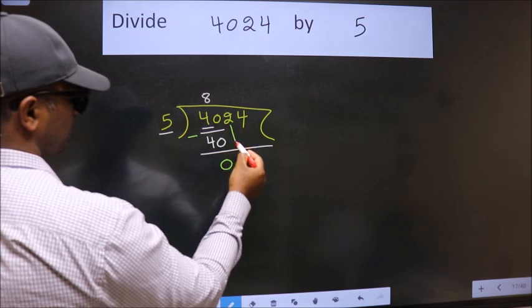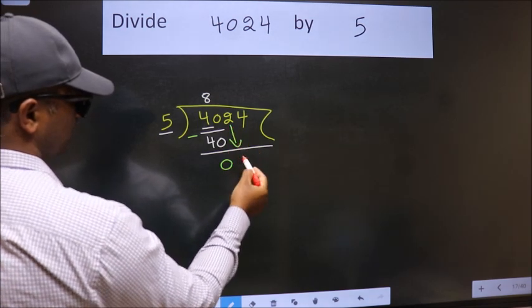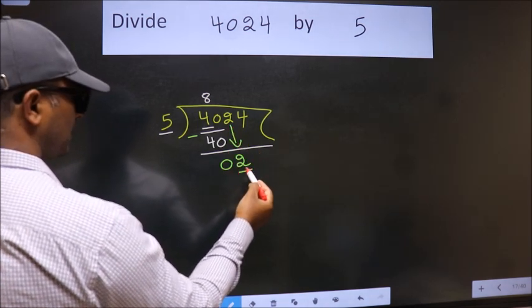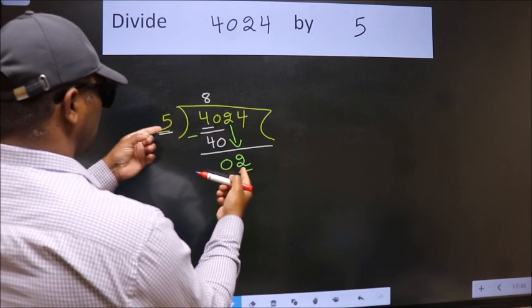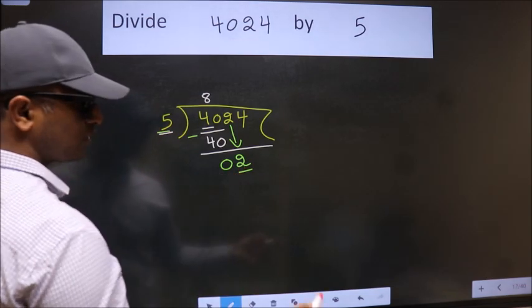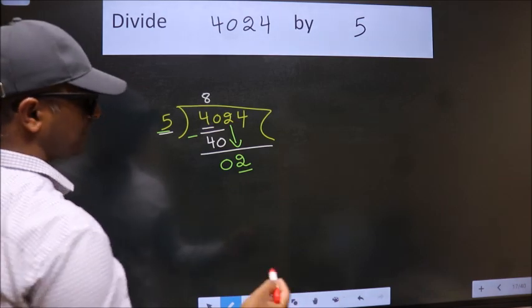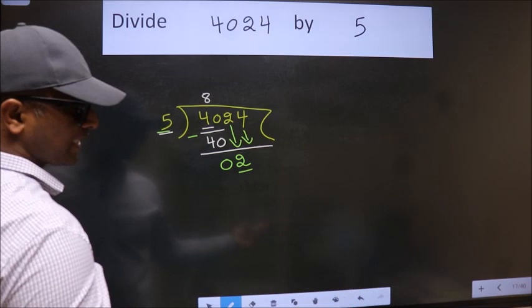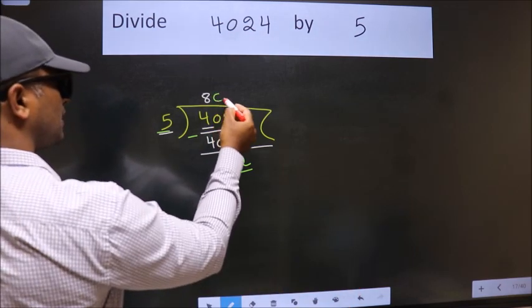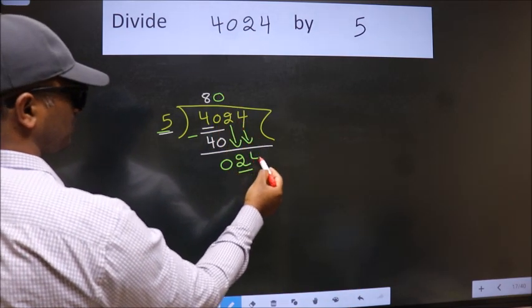After this, bring down the beside number. So 2 down. Now here we have 2. Here 5. 2 is smaller than 5, so we should bring down the second number. And the rule to bring down the second number is put 0 here. Then only we can bring this number down.